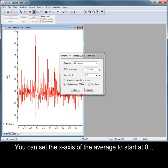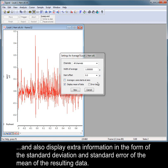You can set the x-axis of the average to start at zero, and also display extra information in the form of the standard deviation and standard error of the mean of the resulting data.